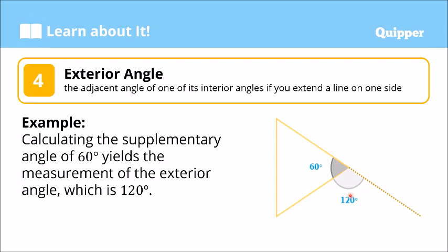As stated earlier, the sum of the interior and exterior angle is 180 degrees. Let's check: 60 plus 120 equals 180 degrees. Yes, it's 180 degrees. So this is the interior angle, and the adjacent angle formed when we extend a line is called the exterior angle.